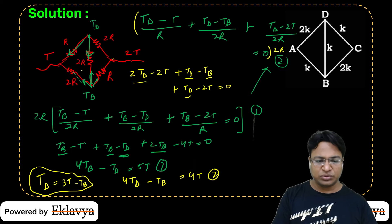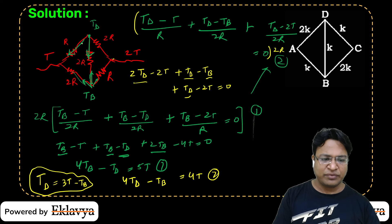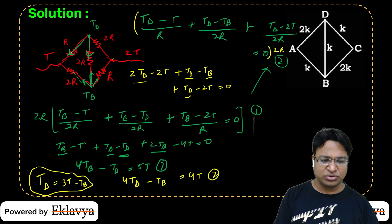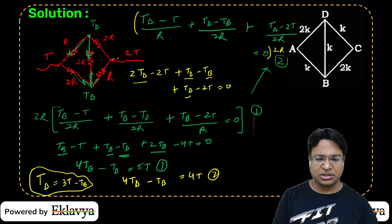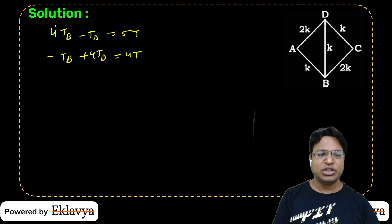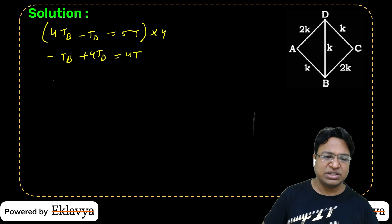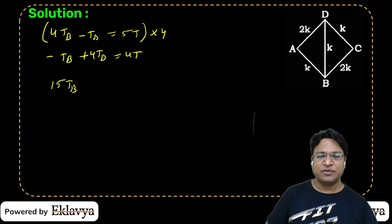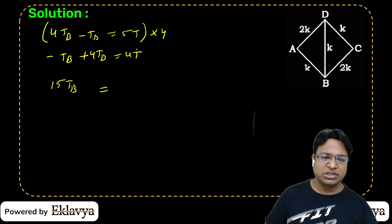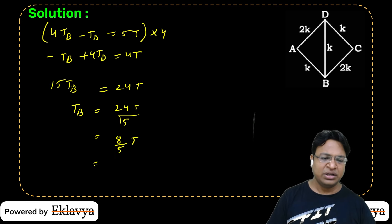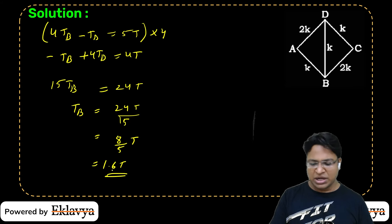Solving the two equations — equation 1: 4Tᵦ − Tᵈ = 5T and equation 2: 4Tᵈ − Tᵦ = 4T — multiply equation 2 by 4: 16Tᵈ − 4Tᵦ = 16T. Adding to equation 1: 15Tᵈ = 21T, and substituting back: Tᵦ = 24T/15 = 8T/5 = 1.6T.